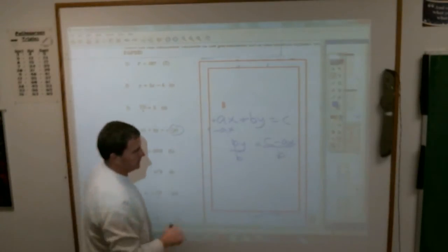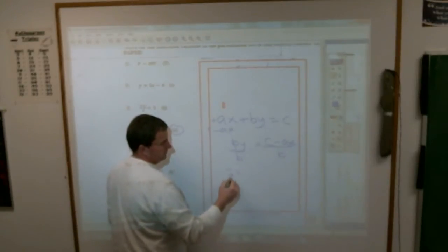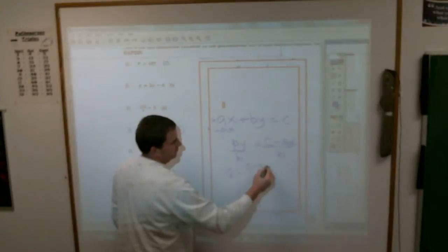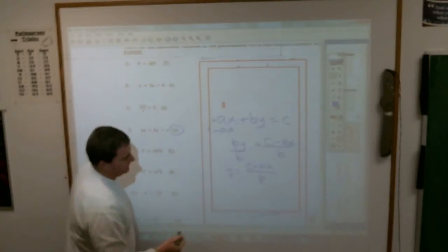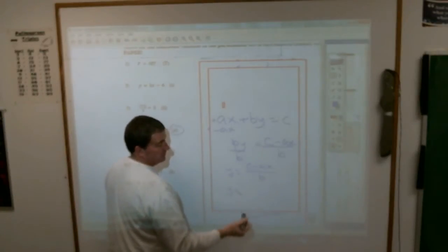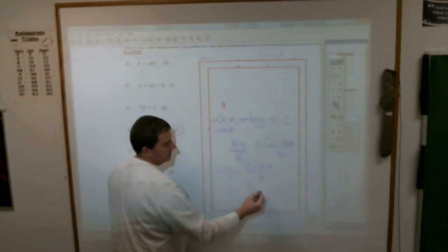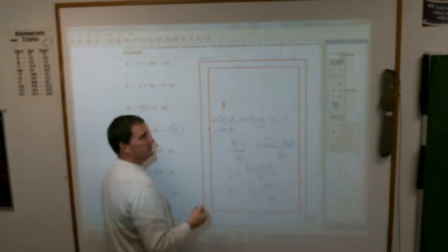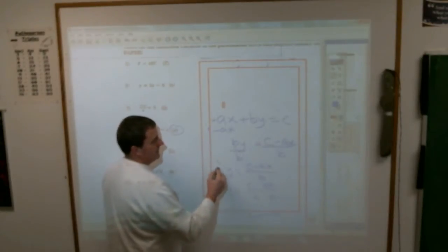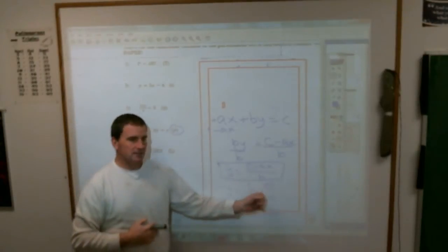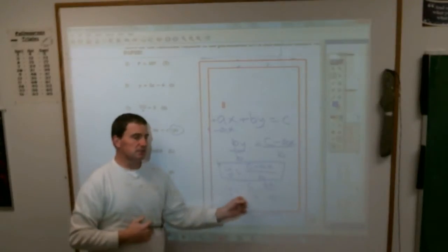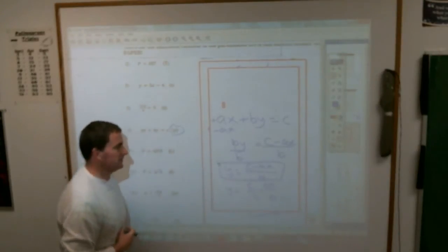And here's where things get a little dicey. This is your answer, but you have to recognize the book or some places will leave it like that, which is okay, and other ones might write it out like this. This means the same thing. C minus AX divided by B is the same thing as C divided by B minus AX divided by B. I think this worksheet probably leaves it like that. Sometimes when you write it like this, it's easier to see what can be simplified, but these two things mean the same exact thing.